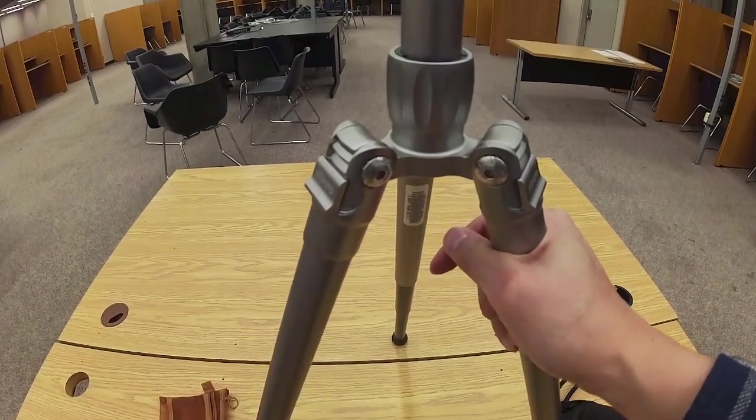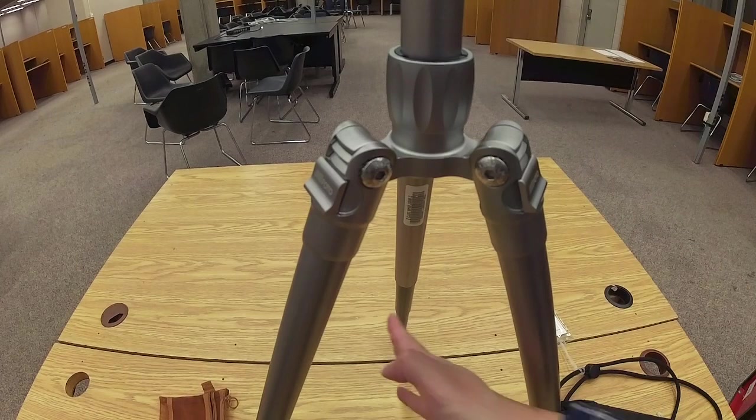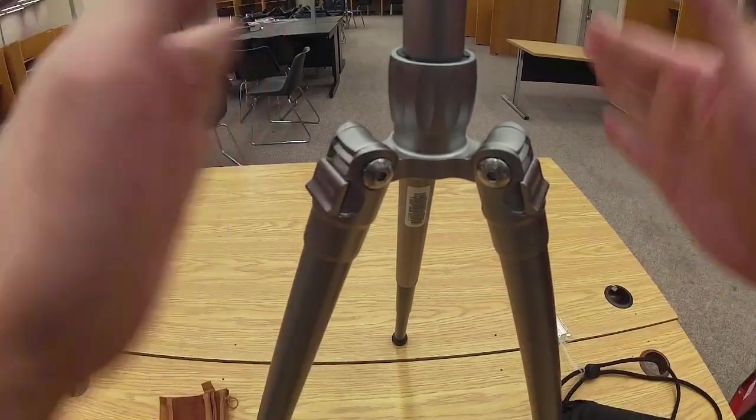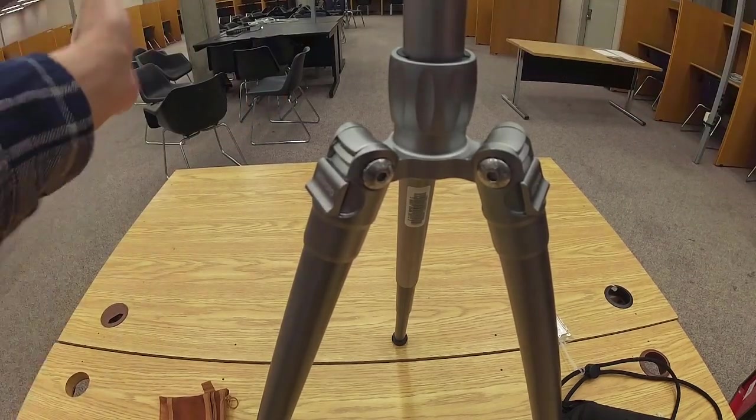And a safety tip is to, if you have a subject here, have one of the legs aligned with that subject. So for whatever reason the tripod tips over, it won't fall onto the subject. It will fall off to one of the sides.